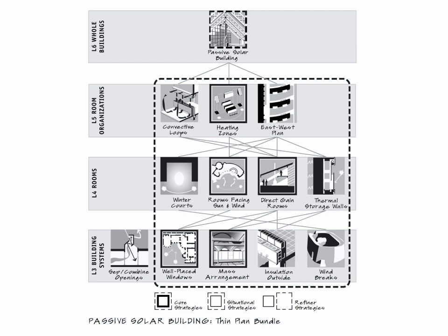In the bundle called Passive Solar Building in Sun, Wind, and Light, you'll find two variations: a thin plan and a thick plan. The thin plan bundle is a building stretched out more on an east-west axis, giving more rooms direct contact with the sun. A thick plan is a building with multiple rooms moving from south to north, so some rooms have direct sun access and some don't.